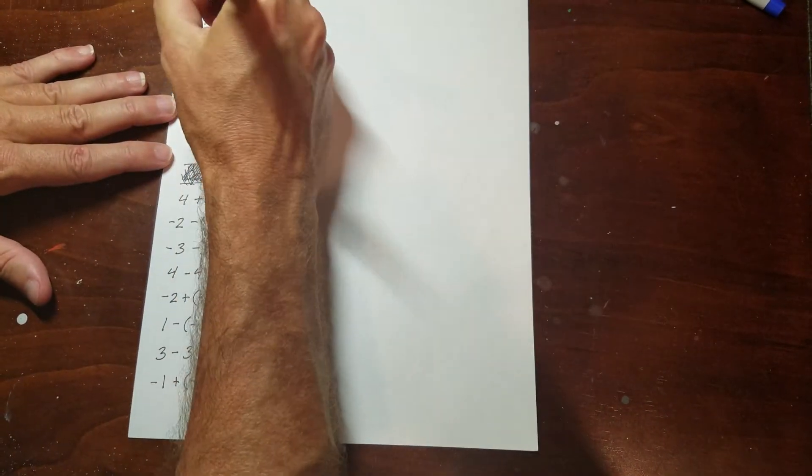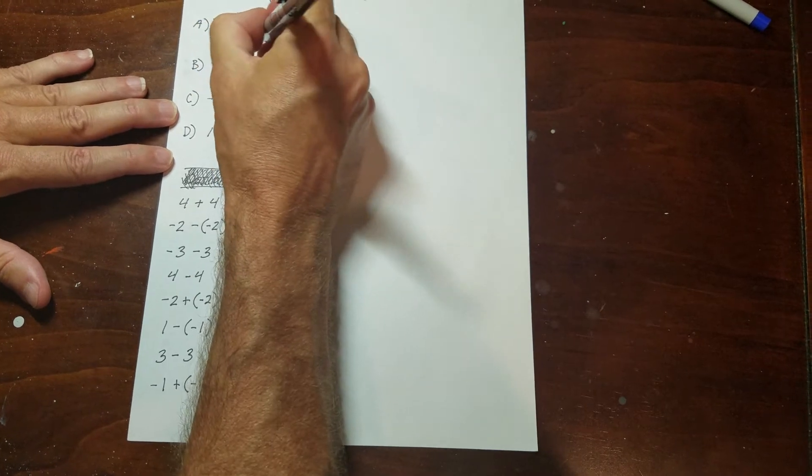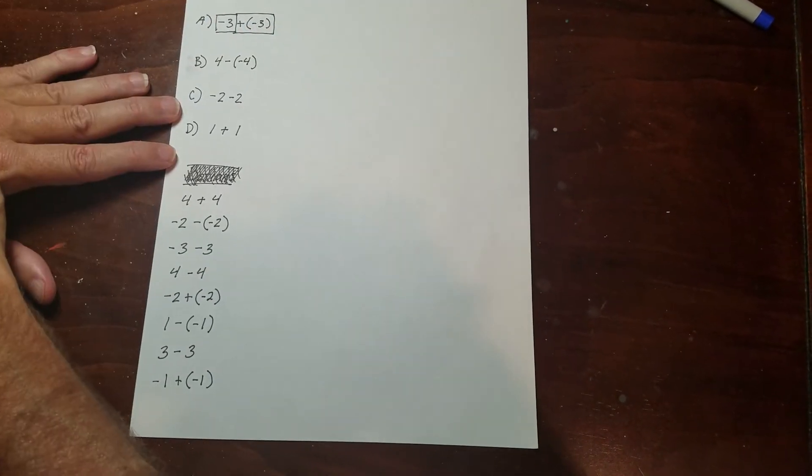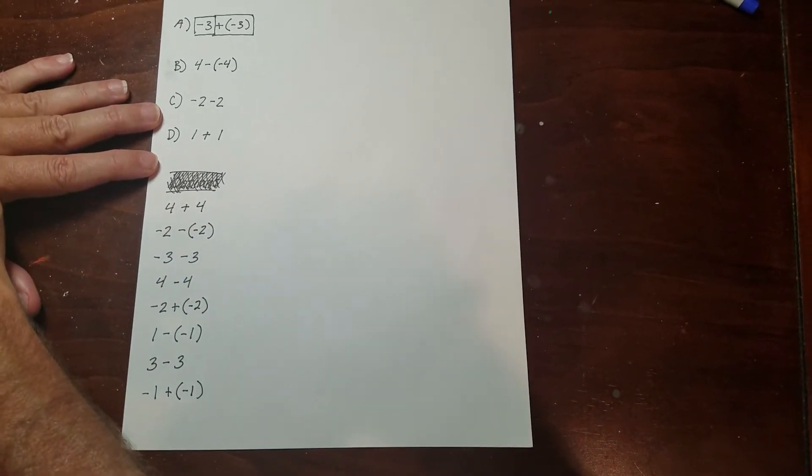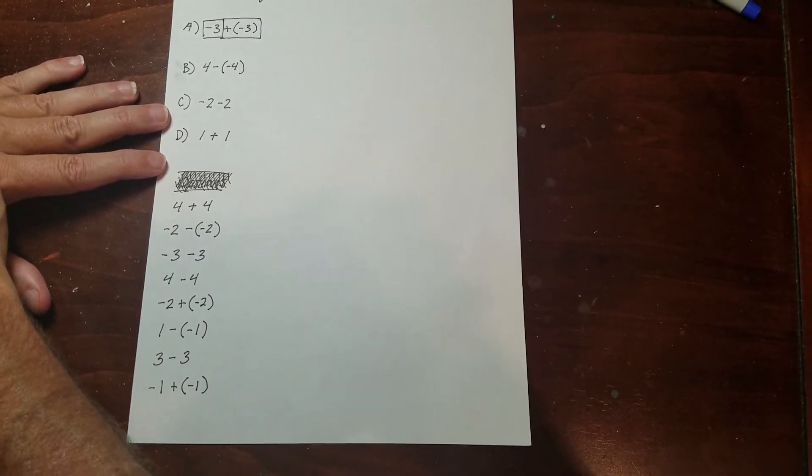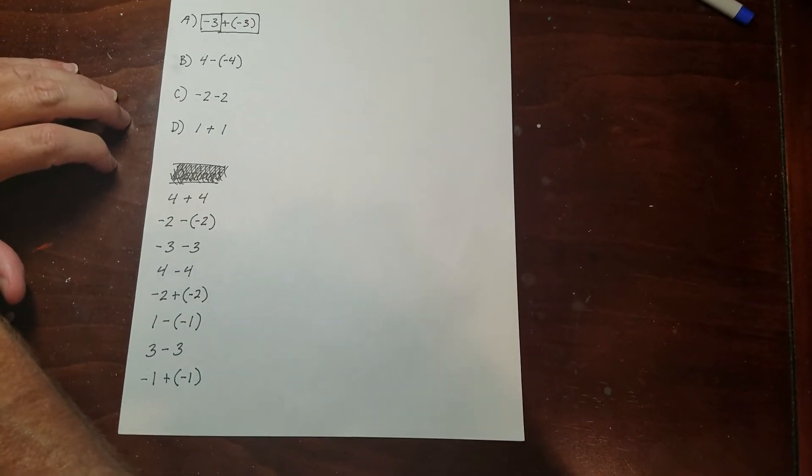So what I usually do is I take both terms of the expression and I draw boxes around it. Now, I also want to add, everything you see me doing on this paper, is this how you're going to show your work in class? Probably not. But this is what I want you to do in your head.